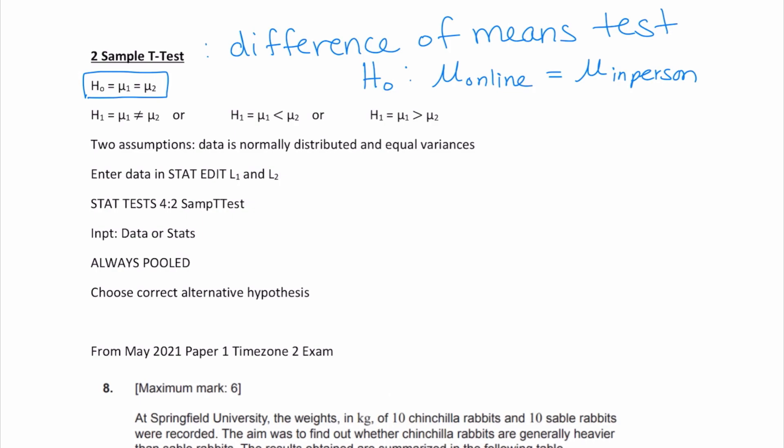For your alternative hypothesis, you have to read the question. Am I trying to determine whether there is a difference between the two averages? Or am I trying to determine whether the kids learning online are scoring higher than the kids who are learning in person? Or do I want to know if the kids learning online are scoring worse than the students who are learning in person? That information is going to be given to you in the problem itself.